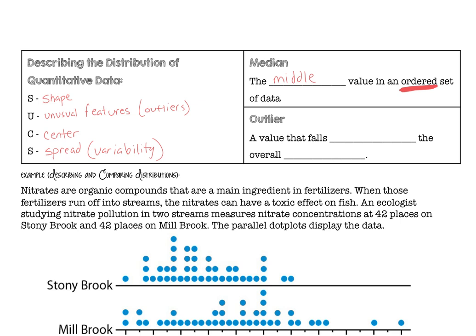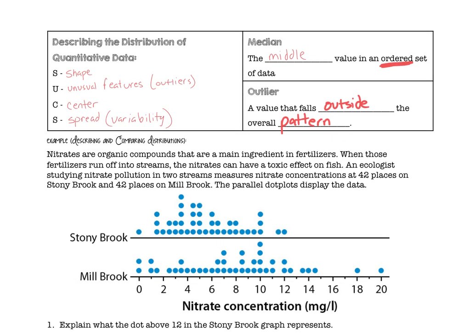Any outliers, an outlier is a value that falls outside the overall pattern. There's several ways that you can determine if a value is an outlier. One of them is the one and a half IQR rule. Another one is if the data is more than two standard deviations from the center of the data, then it's considered an outlier. But we'll get into all that. Today, we're just going to kind of judge it by the eye.